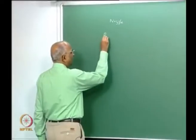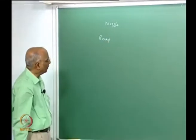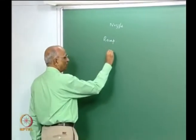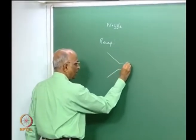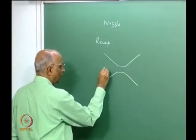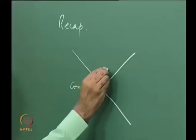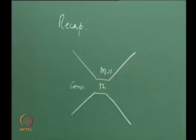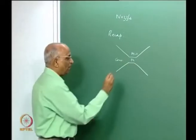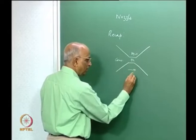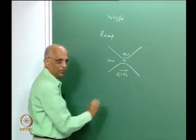But before doing that, let us quickly recap where we were, so that we can connect it with what we are going to do today. All what we told in the last class was: a nozzle, if we need to have a high jet velocity, needs to have a convergent, maybe a throat where Mach number equals 1, and then a divergent. The throat velocity is the sonic velocity, Vt equals At.